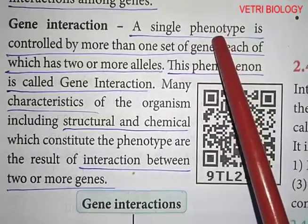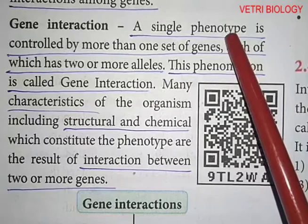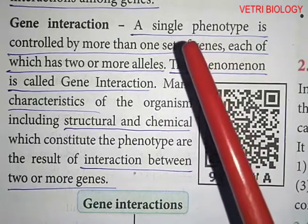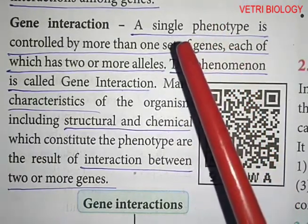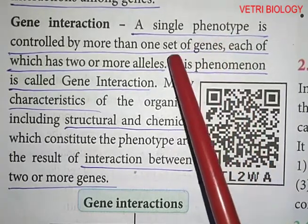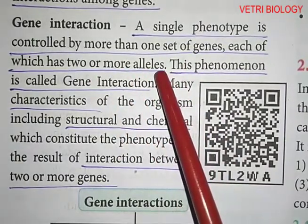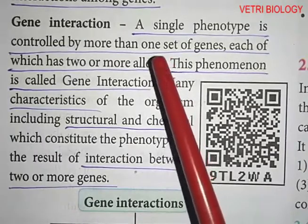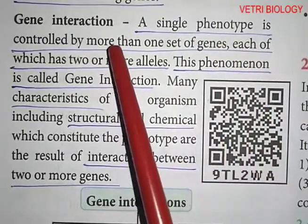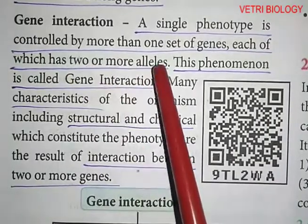This phenomenon is called gene interaction. One phenotype — an external appearance of a character — is controlled by many genes, each of which has two or more alleles. A single phenotype is controlled by more than one set of genes, each of which has two or more alleles. This is called gene interaction.